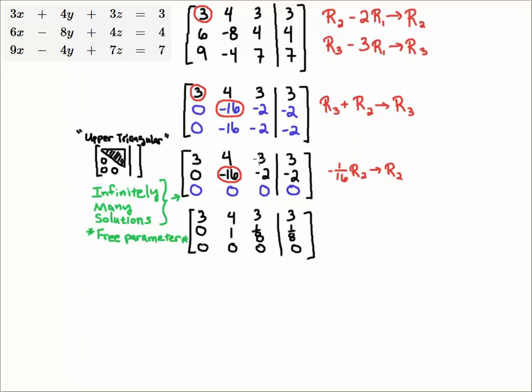I don't do that until I get the matrix down to upper triangular form. So you should always be working in a systematic fashion down to the right, down to the right, down to the right. Don't haphazardly eliminate things. That's a very common mistake.